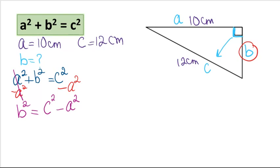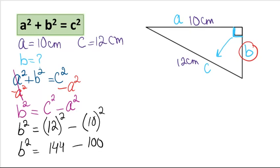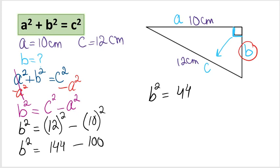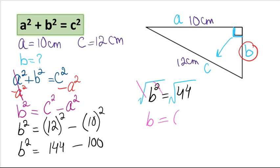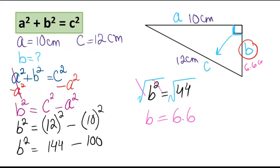So we have the variable isolated. Let's plug in the numbers and solve for b. So b squared equals 12 squared minus 10 squared, which gives us 144 minus 100. So we have b squared equals 44. We need to find b, so we take the square root of both sides. The square root and the square cancel each other out, and we are left with b equals the square root of 44, which is 6.6. So side b is 6.6 centimeters long.